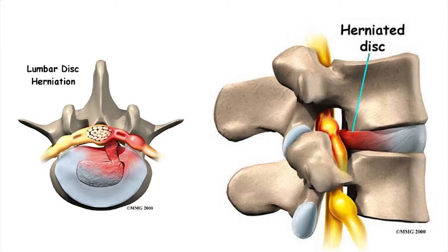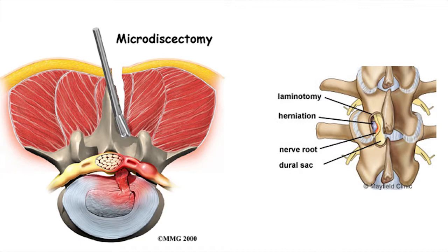Once the inner disc material extends out past the regular margin of the outer disc wall, it can press against very sensitive nerve tissue in the spine. This disc material can compress or even damage the nerve tissue, causing weakness, tingling, or pain in the low back, or it can radiate into one or both legs — often referred to as sciatica.